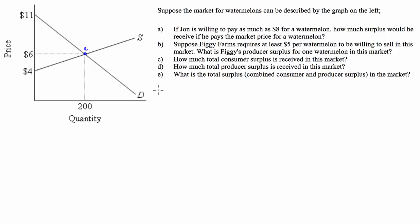For part A, the consumer surplus that John is going to receive is the price he's willing to pay — $8 — minus the price he actually pays, which is the equilibrium market price of $6. So the consumer surplus he receives at that price is $2. And that is the answer for part A.